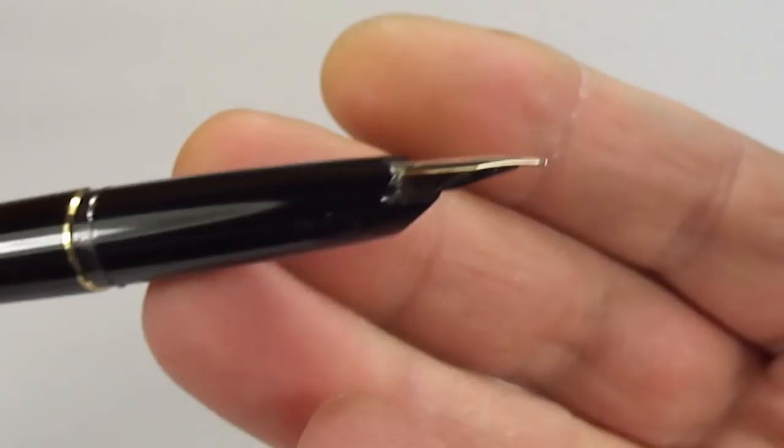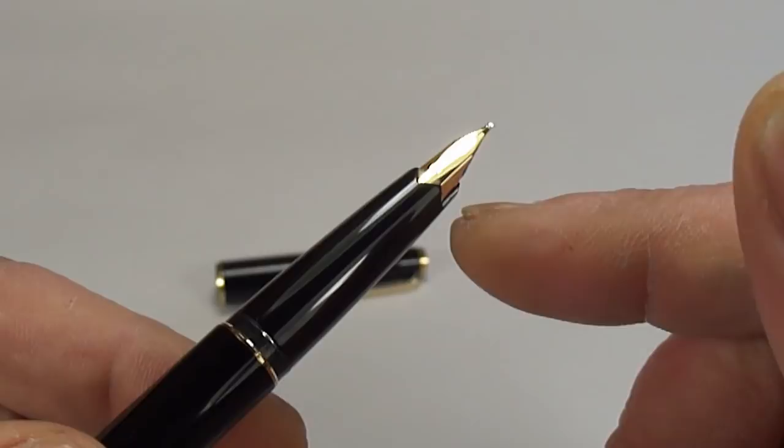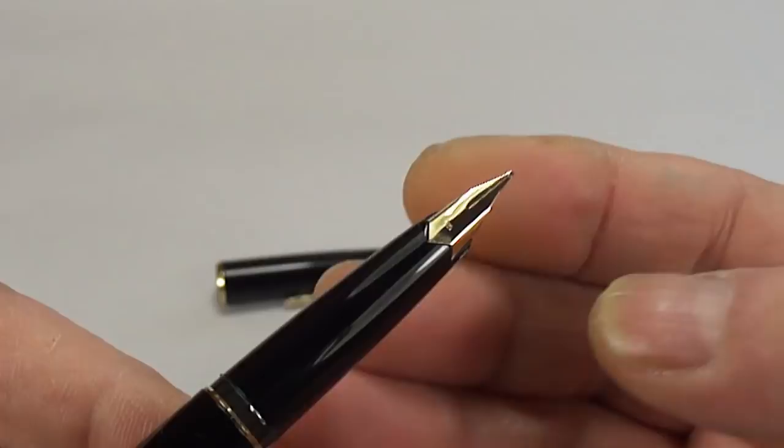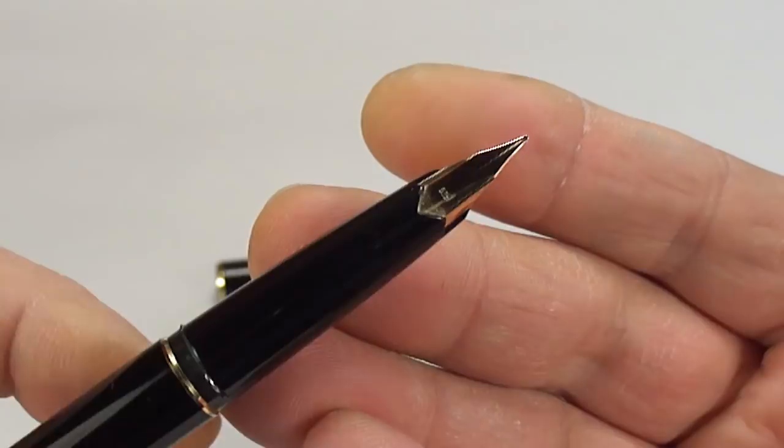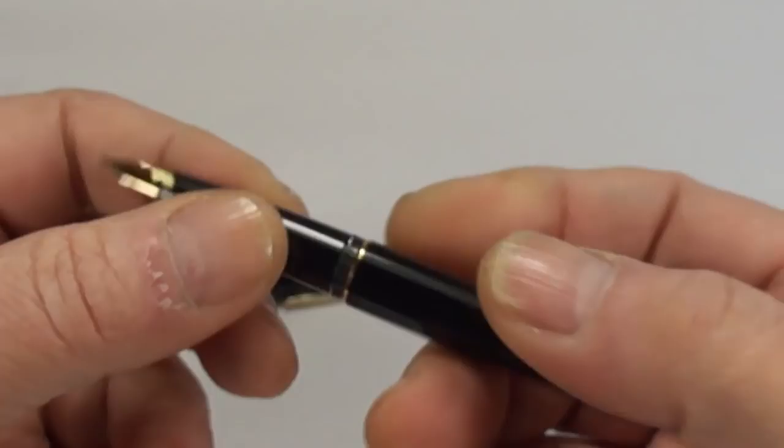Incidentally, I need to get into the habit of showing you before and after. One of the problems, as I say, was ink flow. When I actually took this section and the feed out, underneath the nib, on the feed, it was full of gunky ink. So, it doesn't surprise me that it had ink flow problems. But, that's all been cleaned. Everything, the feed, the collector, everything, the nib, etc. Where all this inky gunk was, has been fully cleaned.